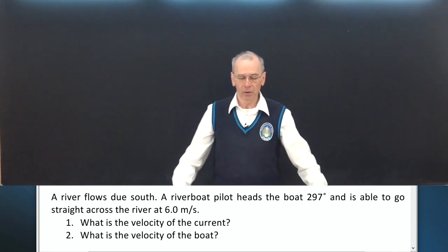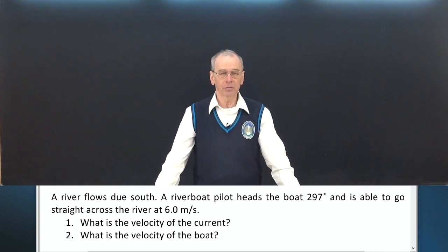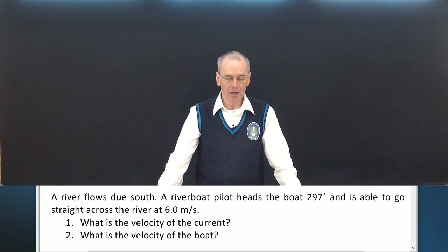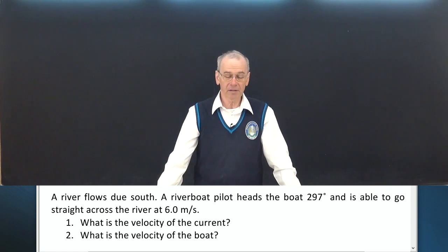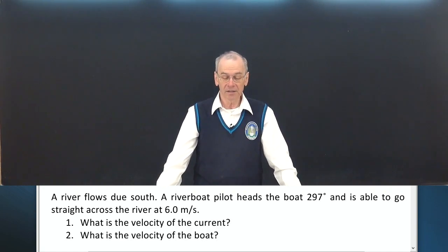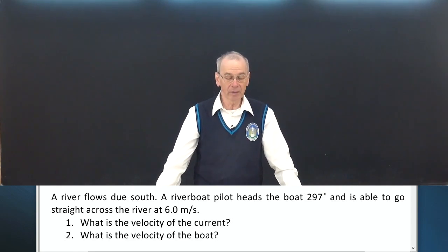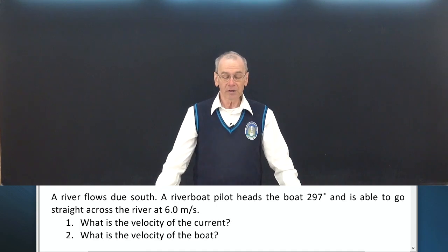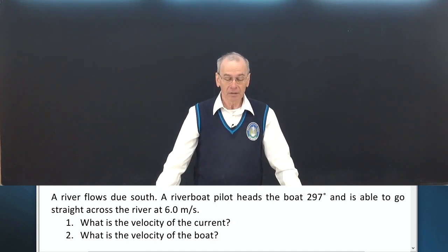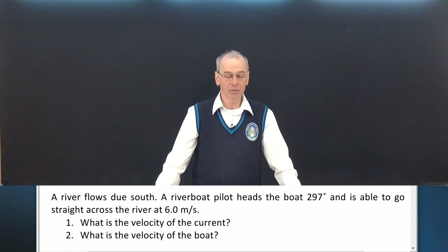A river flows due south. A riverboat pilot heads the boat at 297 degrees and is able to go straight across the river at 6 meters per second. What is the velocity of the current? What is the velocity of the boat?